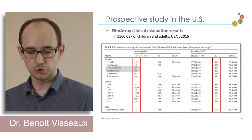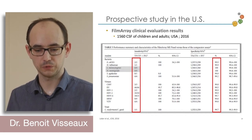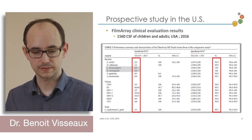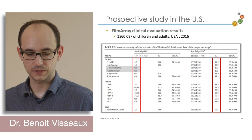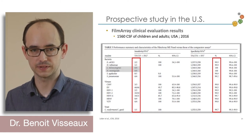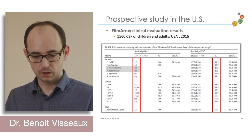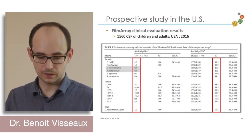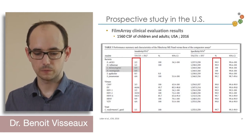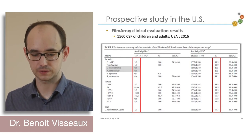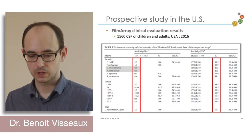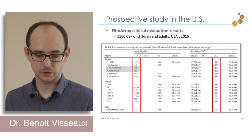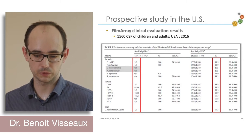A large prospective study was also conducted in the US with more than 1,500 CSFs, achieving very good sensitivity with very few targets missed — Listeria and meningococcus were not tested in that study either — and also very good specificity.